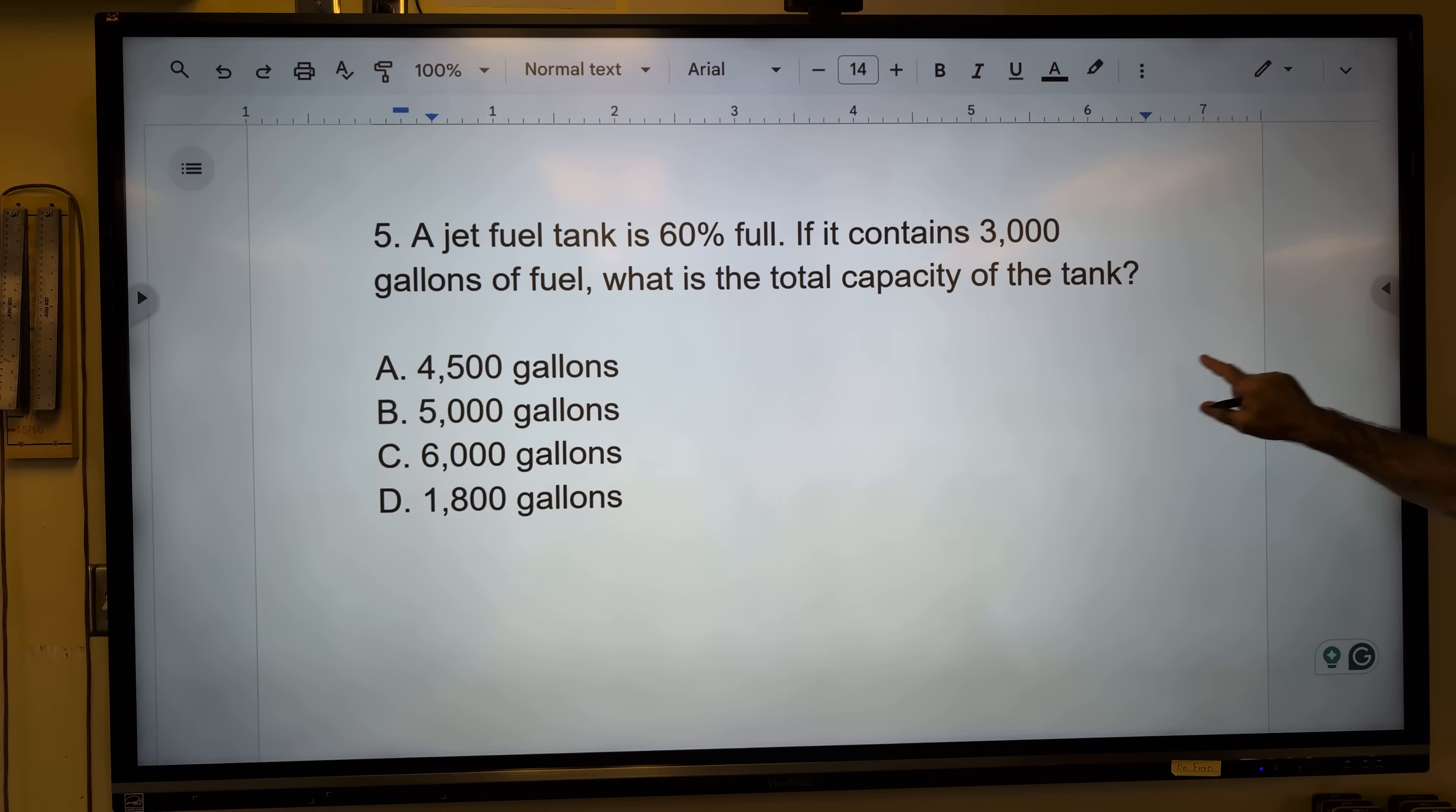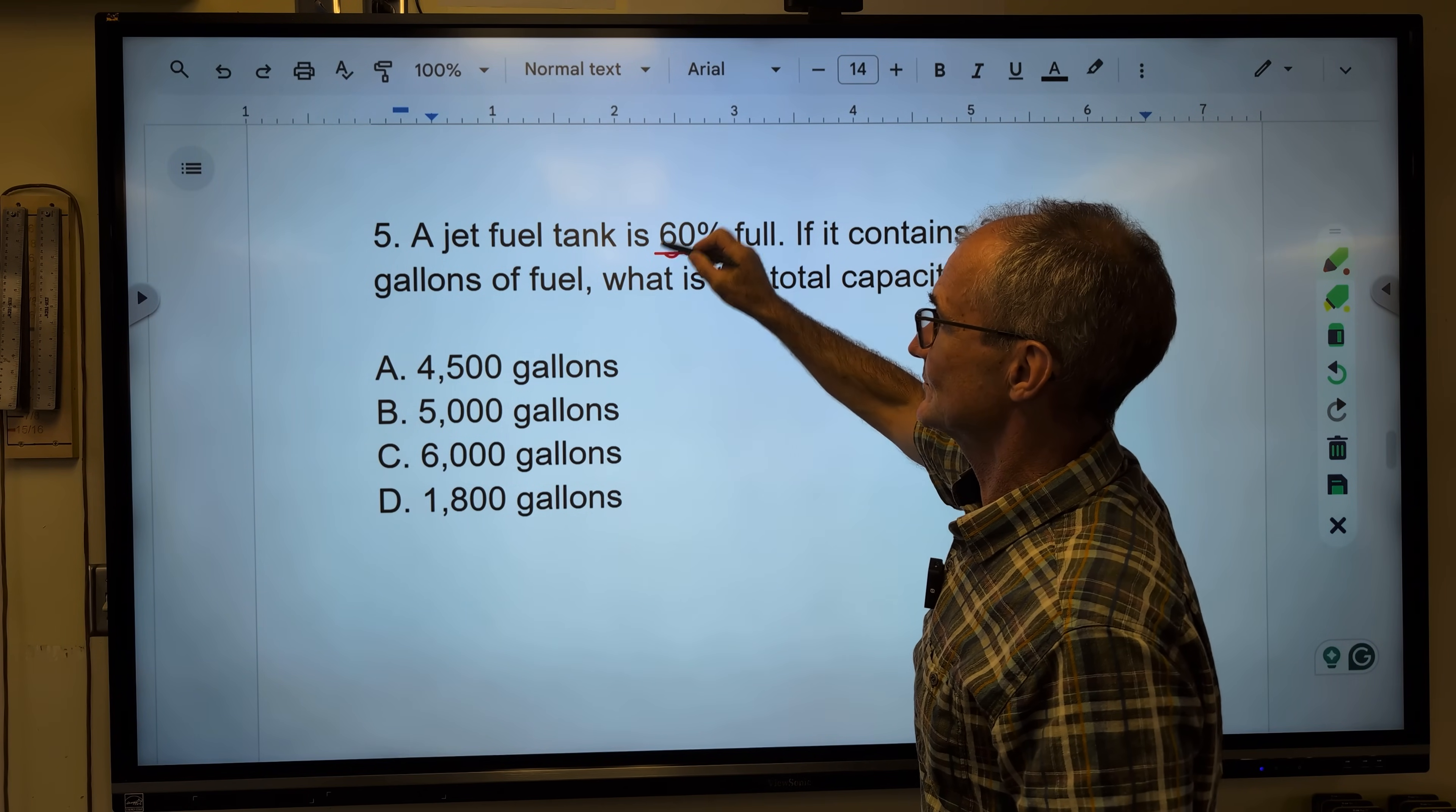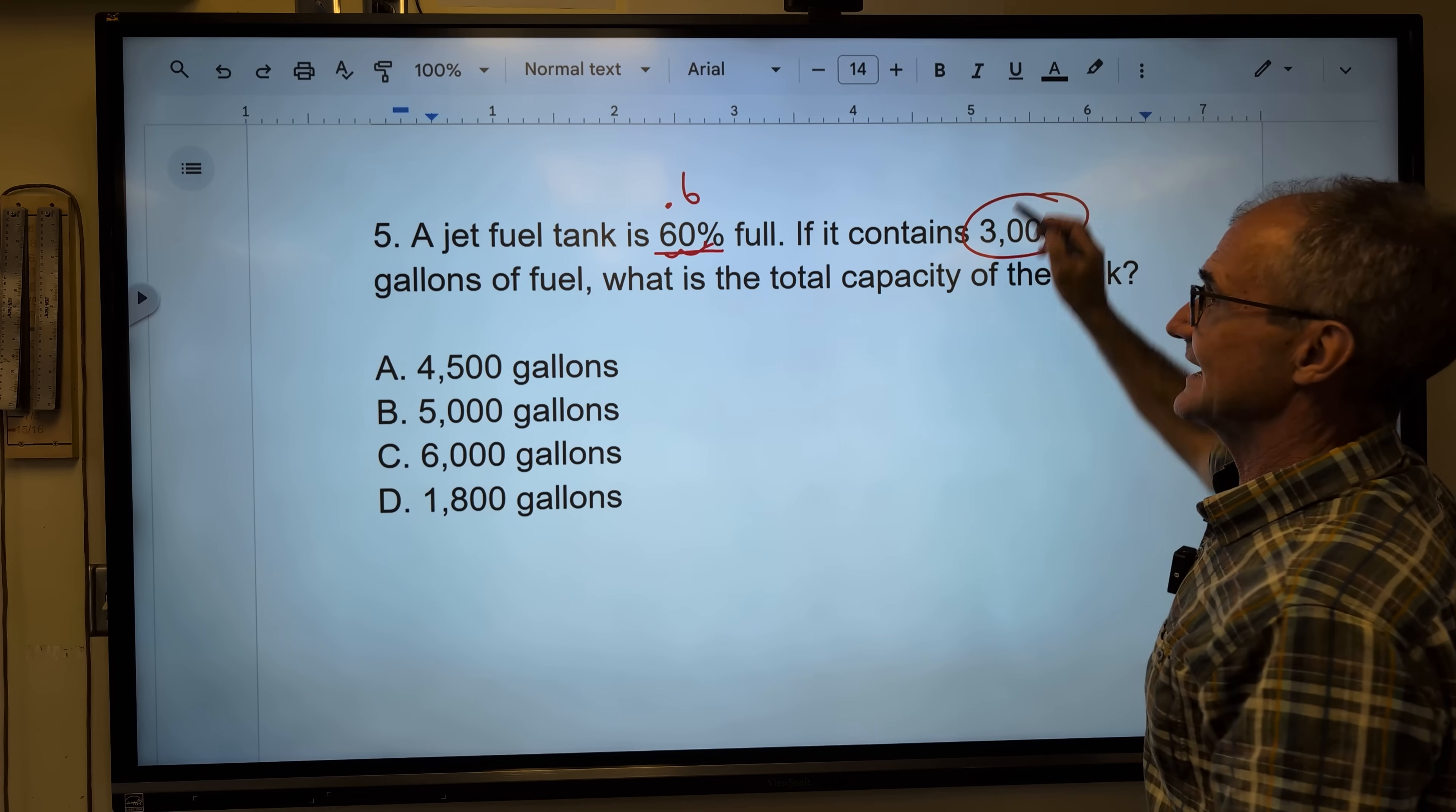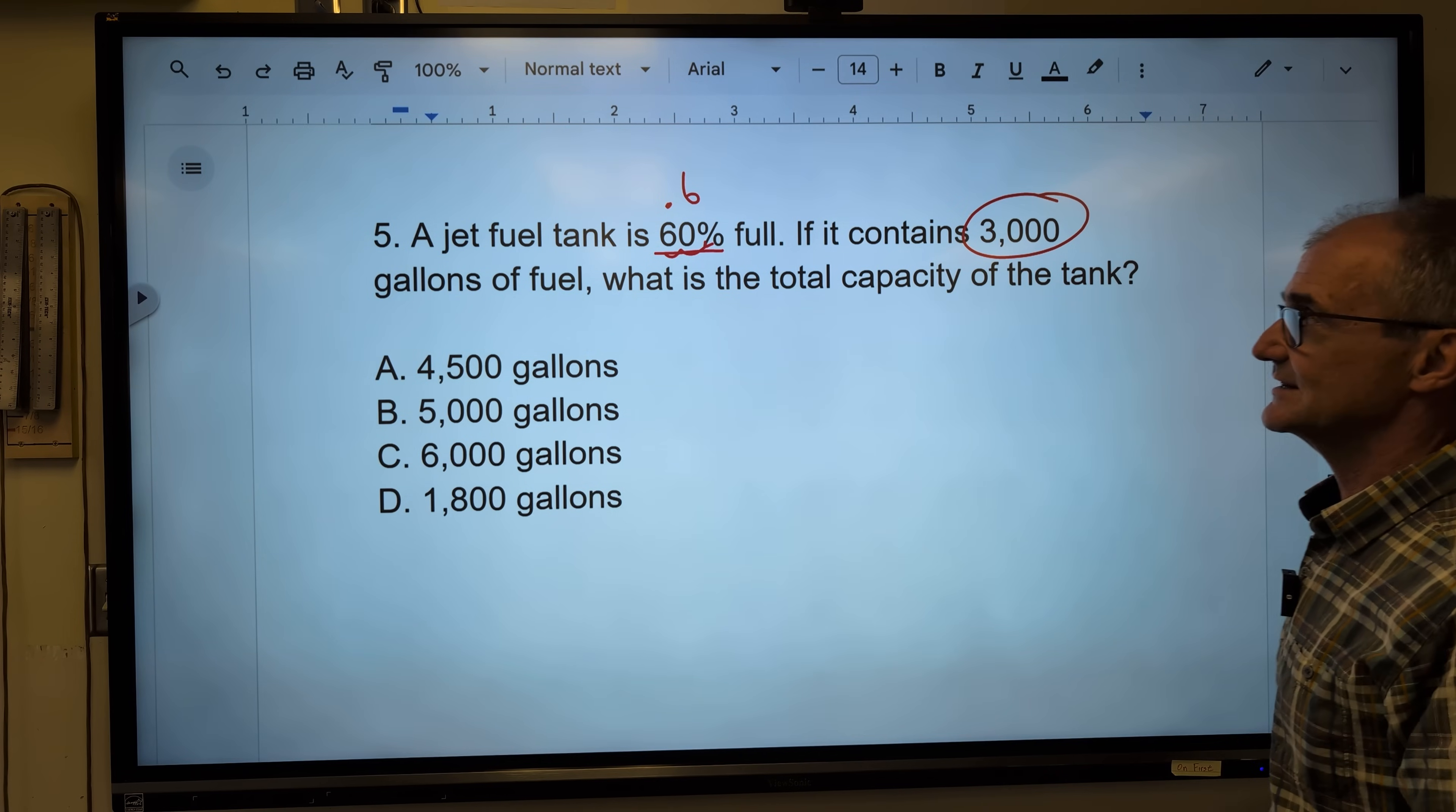Problem number five, these as well are a little tricky. A jet fuel tank is 60% full. First thing I'm going to do is convert that to a decimal. This is 0.6. It is 0.6 full. It contains 3,000 gallons. What's the total capacity? So I have the total capacity times 0.6 equals 3,000.